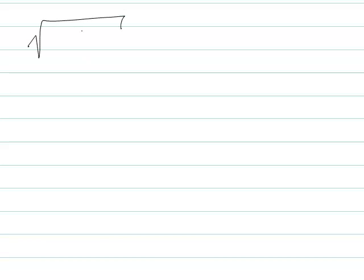So essentially what you're doing whenever you're going to be reducing radicals — you might have something like x to the fifth. Basically what it's asking, because we're square rooting it, is: how many pairs of x are in x to the fifth? That's one way to think about it.